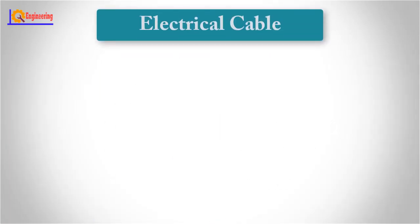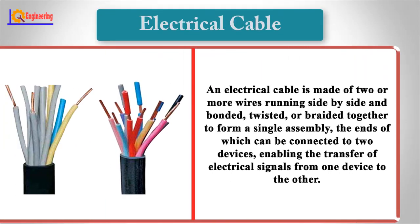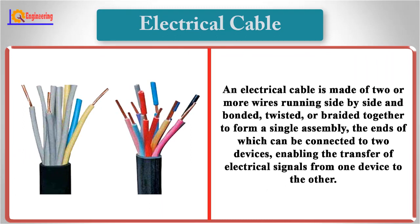Electrical Cable: An electrical cable is made of two or more wires running side by side and bonded, twisted, or braided together to form a single assembly, the ends of which can be connected to two devices, enabling the transfer of electrical signals from one device to the other.